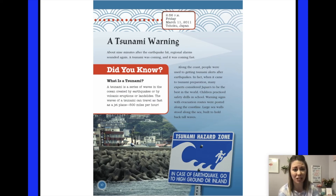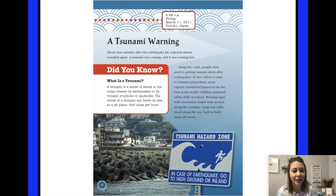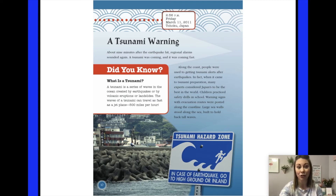What is a tsunami? A tsunami is a series of waves in the ocean created by earthquakes, volcanic eruptions, or landslides. The waves of a tsunami can travel as fast as a jet plane — 500 miles per hour. So it's a big wave that travels really fast.